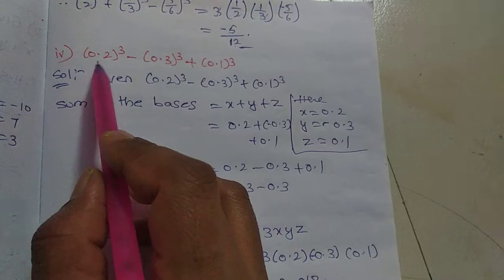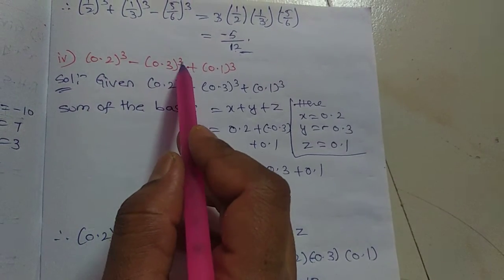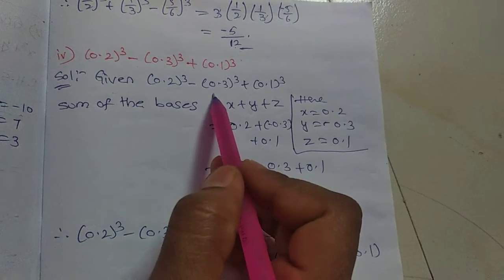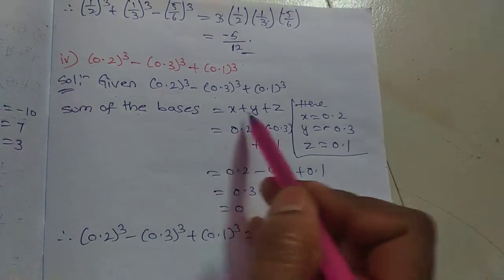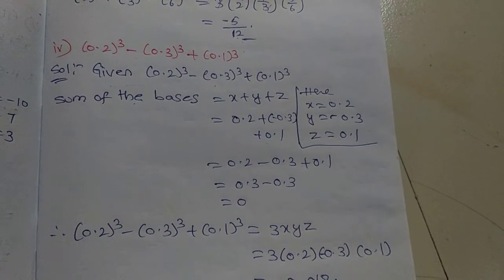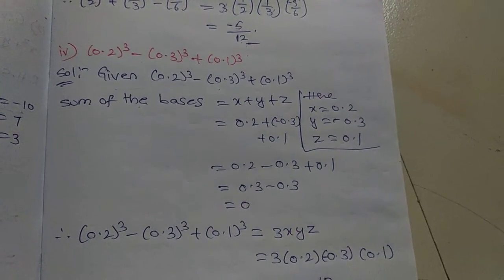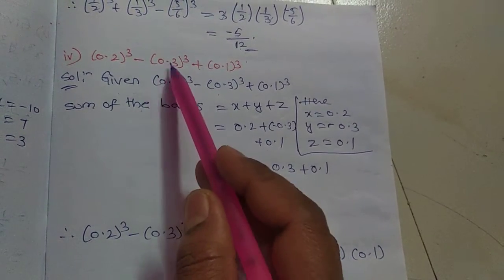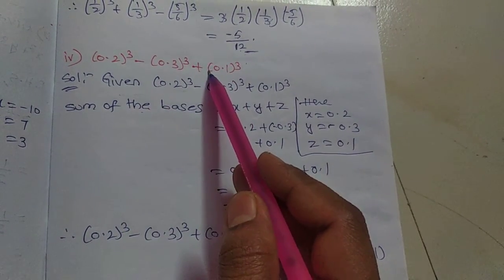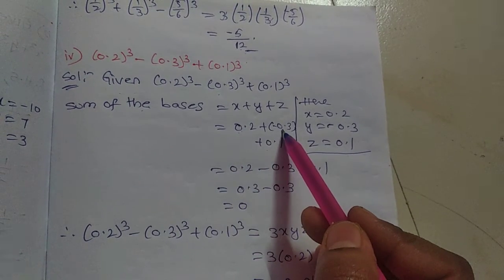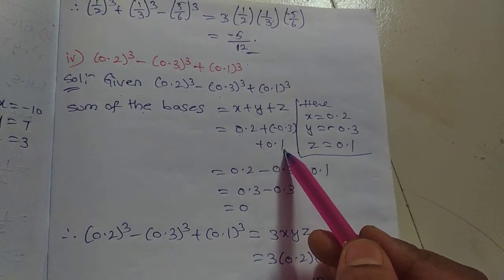Fourth problem: (0.2)³ - (0.3)³ + (0.1)³. Write the identity line, then find the sum of the bases: x + y + z. Here, x value is 0.2, y value is -0.3 (the negative goes with this term), and z value is 0.1. Substitute: 0.2 + (-0.3) + 0.1.